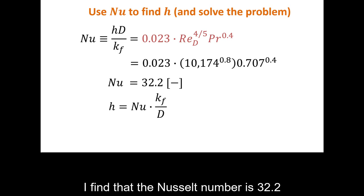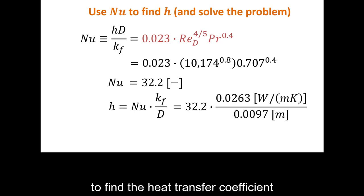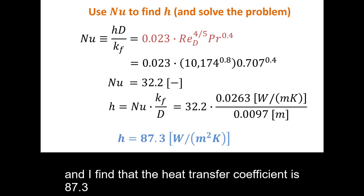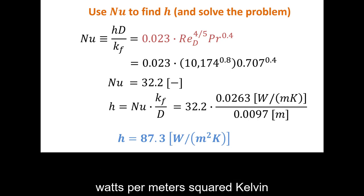I find that the Nusselt number is 32.2. I use the definition of the Nusselt number to find the heat transfer coefficient. I plug some data into my calculator, and I find that the heat transfer coefficient is 87.3 watts per meter squared Kelvin.